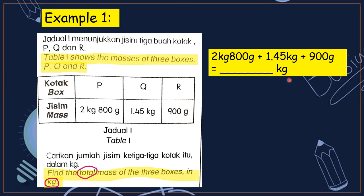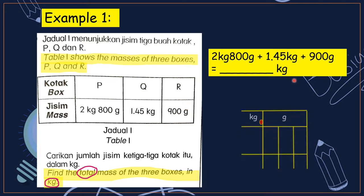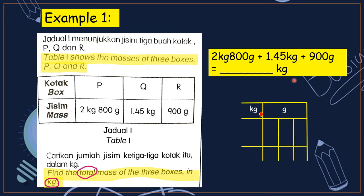For KG and gram, we can use a 1-3 box to calculate the answer. You arrange the numbers inside the 1-3 box, and after you add, the final answer is in KG. KG is together with a point, so your answer will have a point.